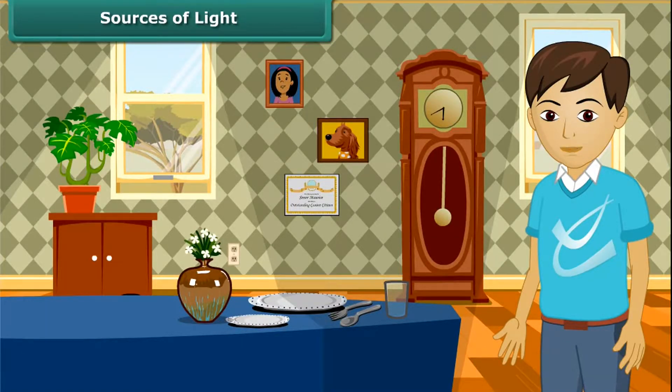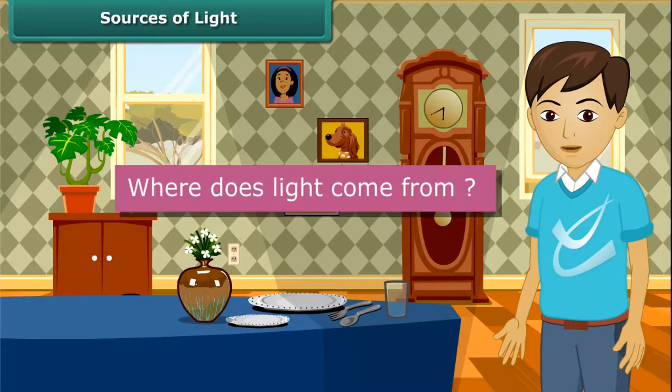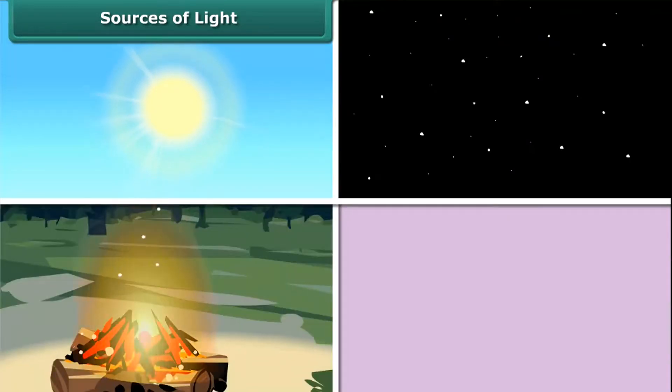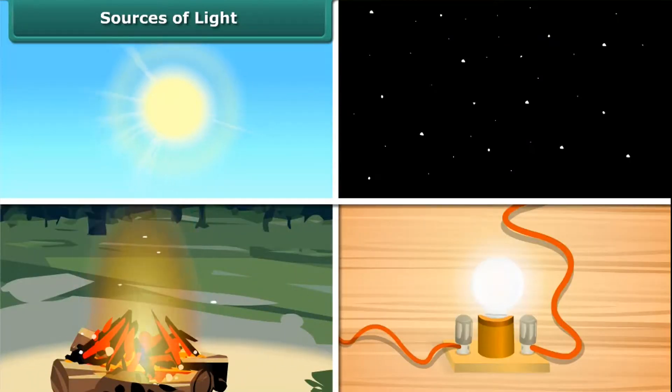Sources of Light. Can you tell where does light come from? Light comes from many sources like the sun, stars, fire, candle, an electric light bulb, etc.